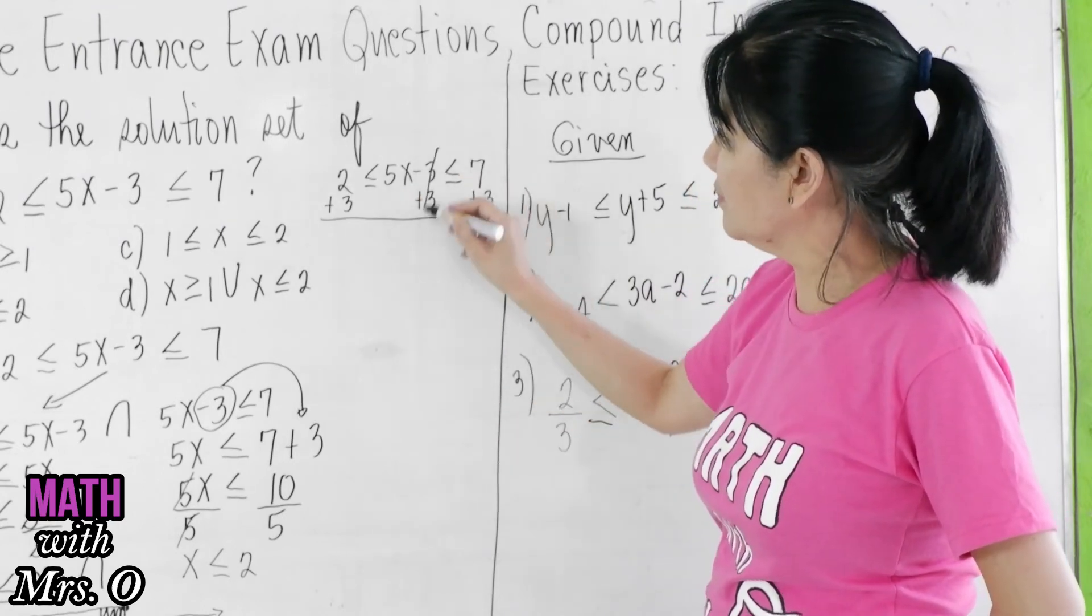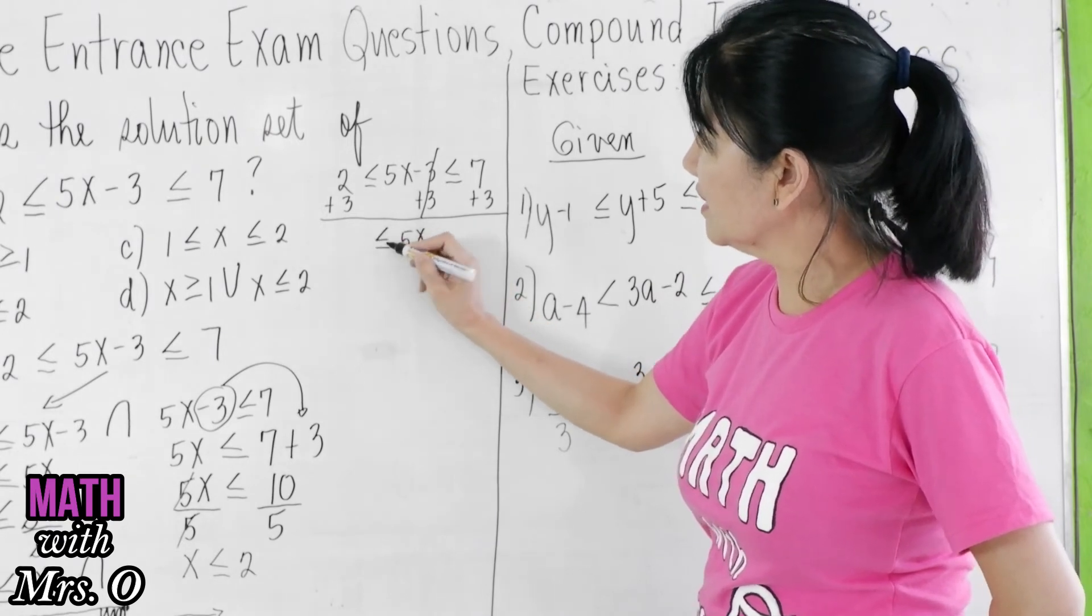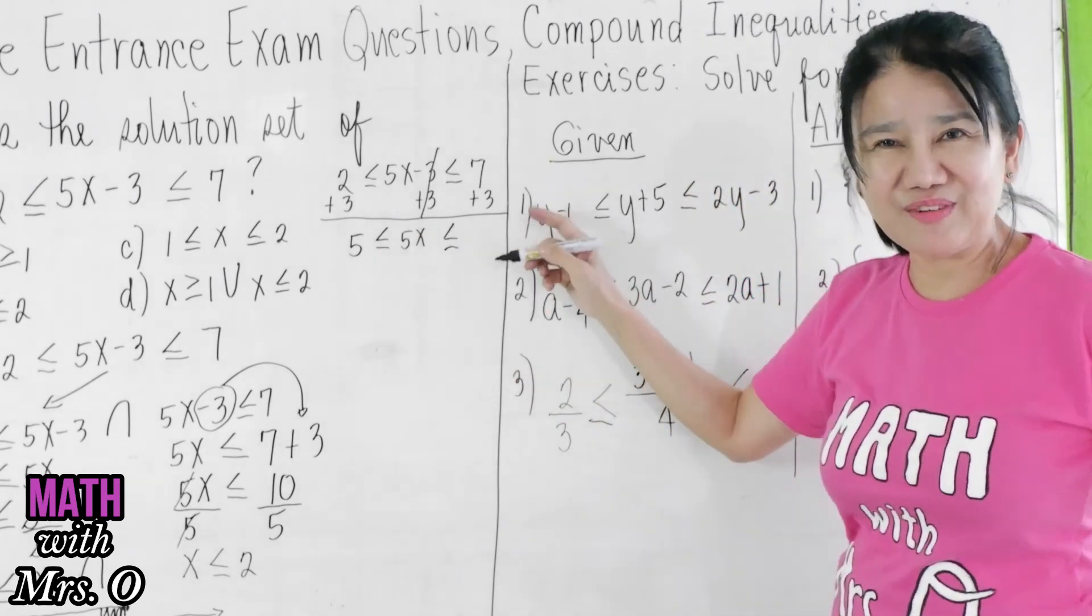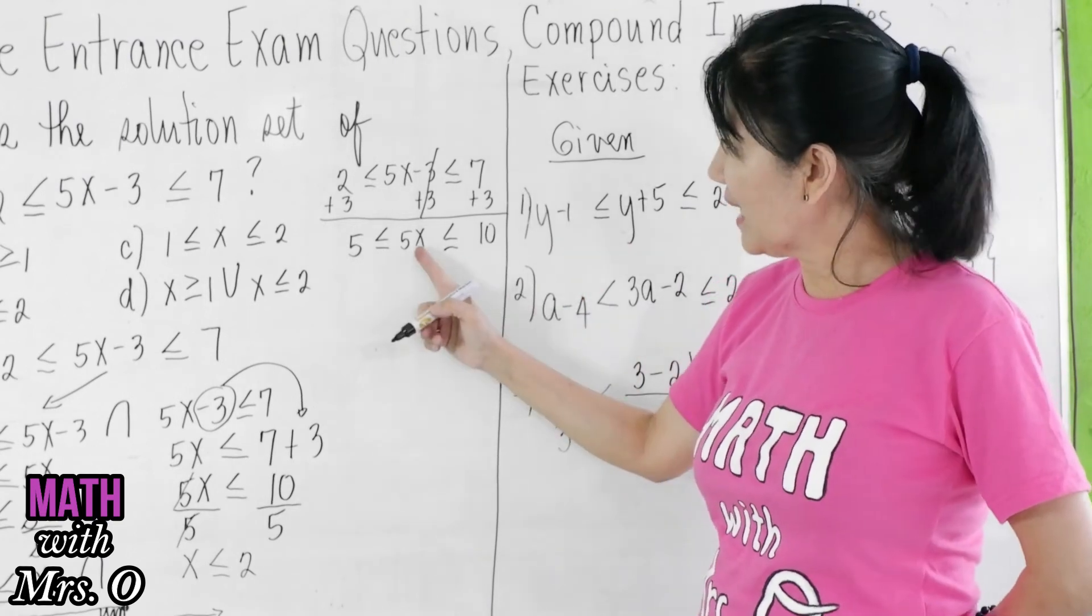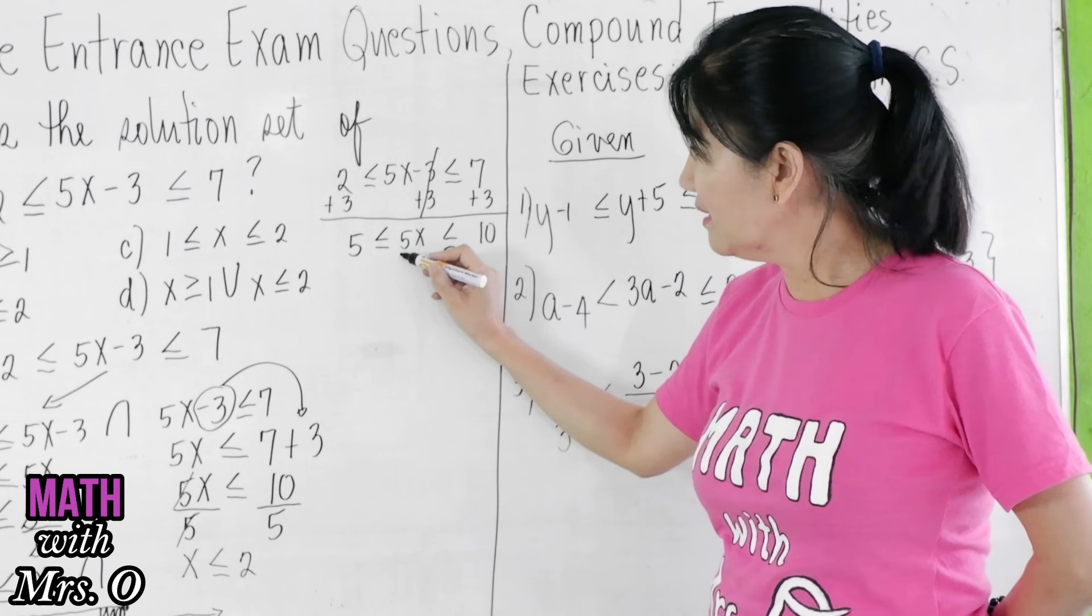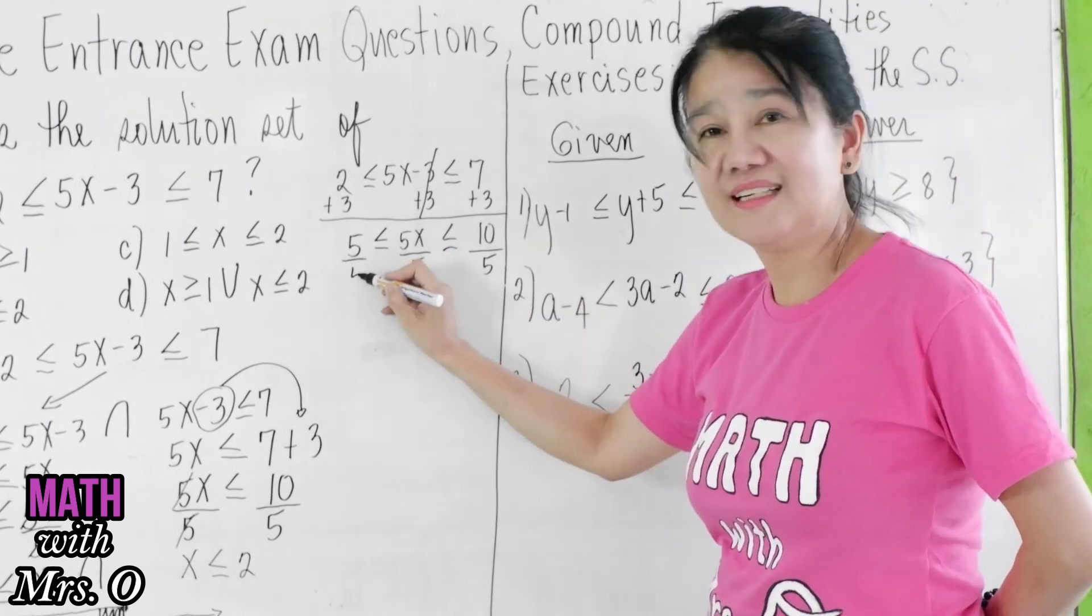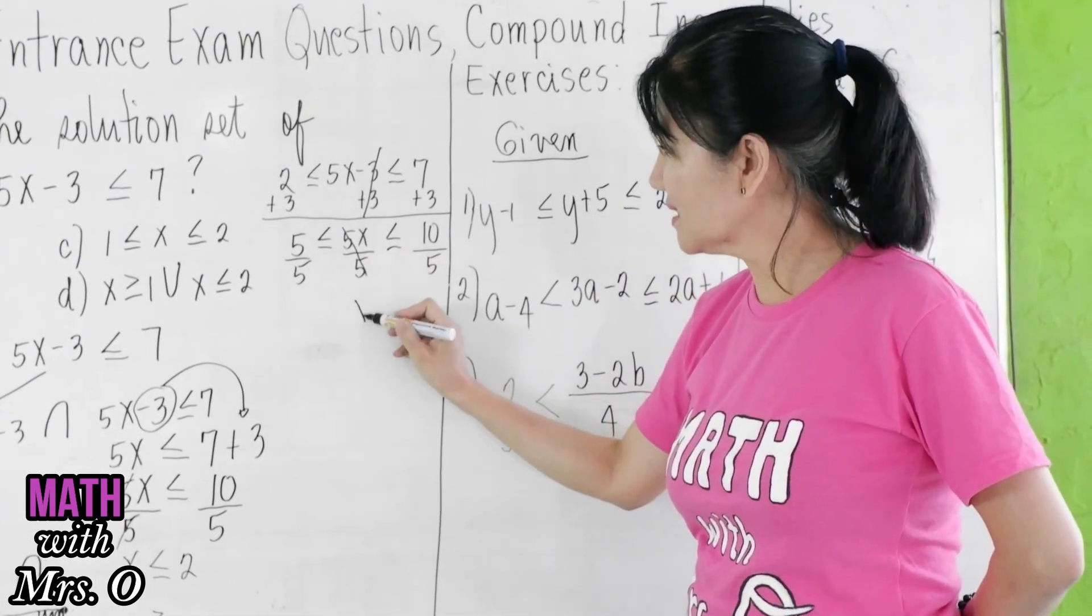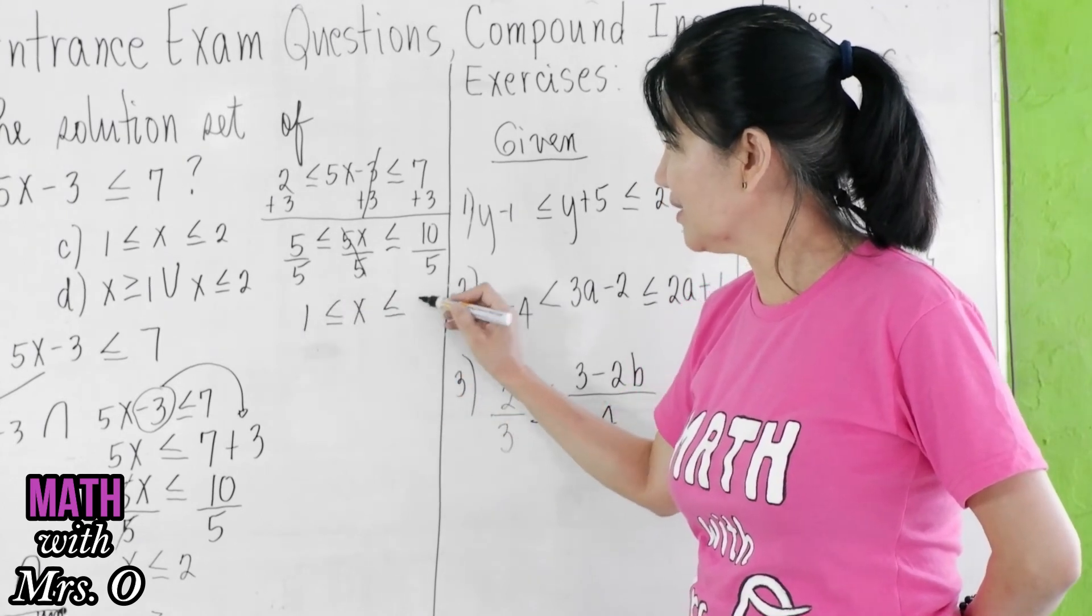This will now be giving you 5x, which is greater than or equal to 2 plus 3 is 5 and less than or equal to 7 plus 3 is 10. Then you can now isolate x here by dividing 5 to all sides. So this will give you x is greater than or equal to 1 and less than or equal to 2.